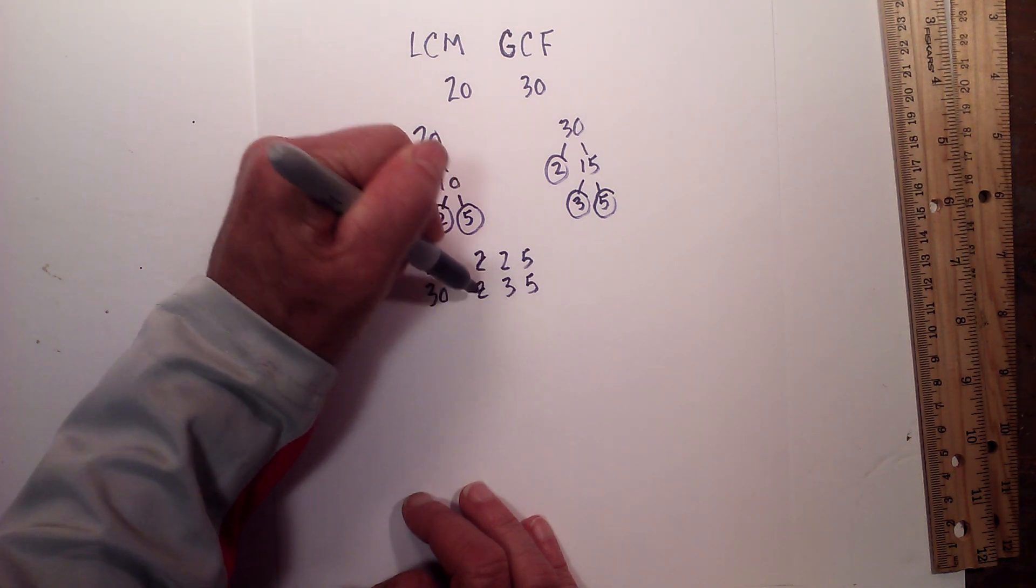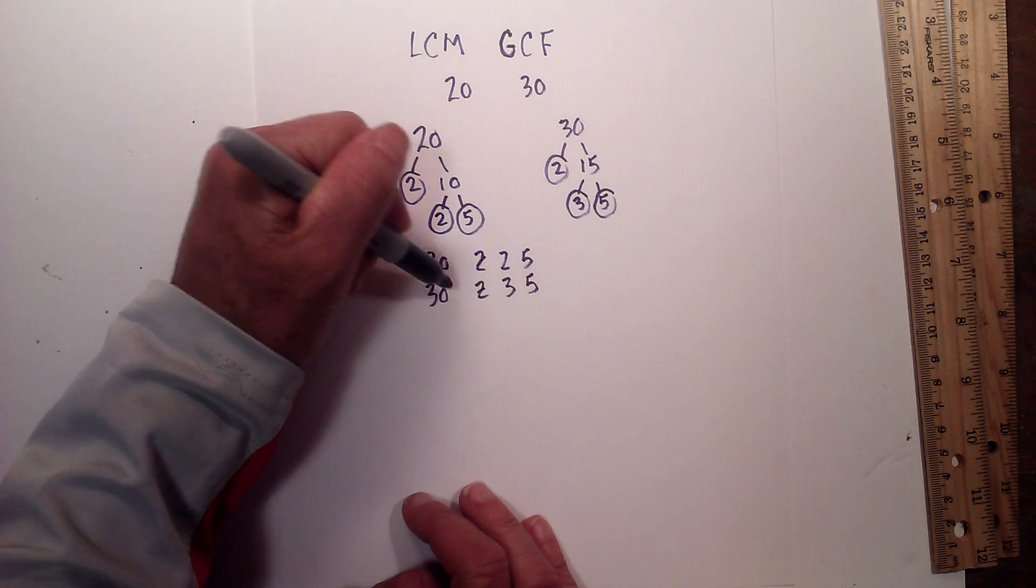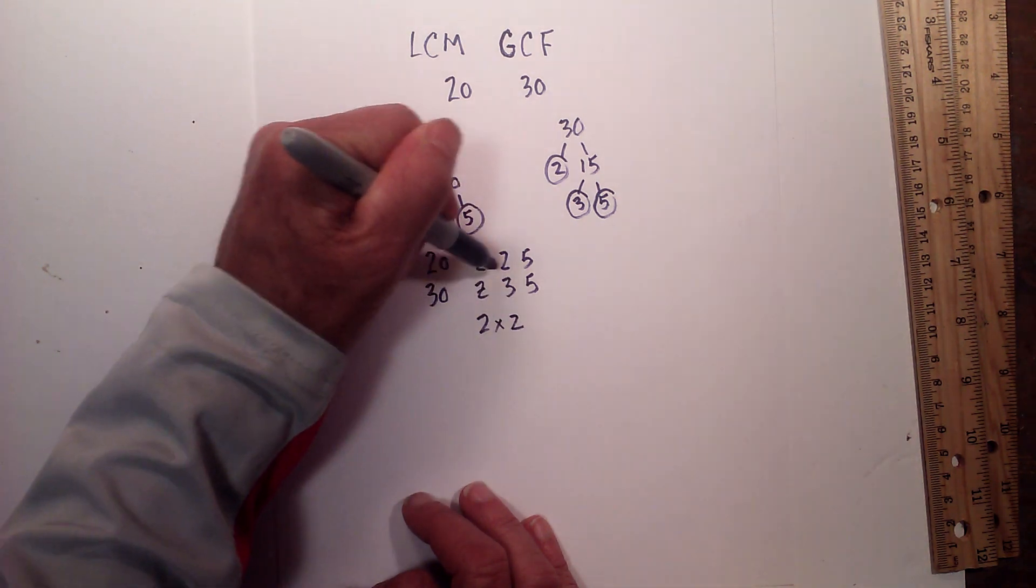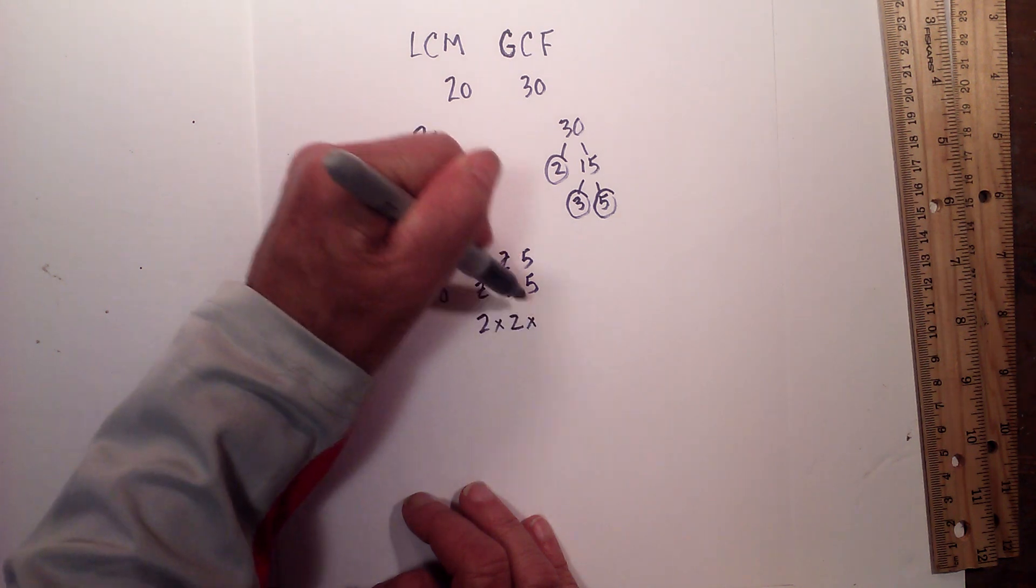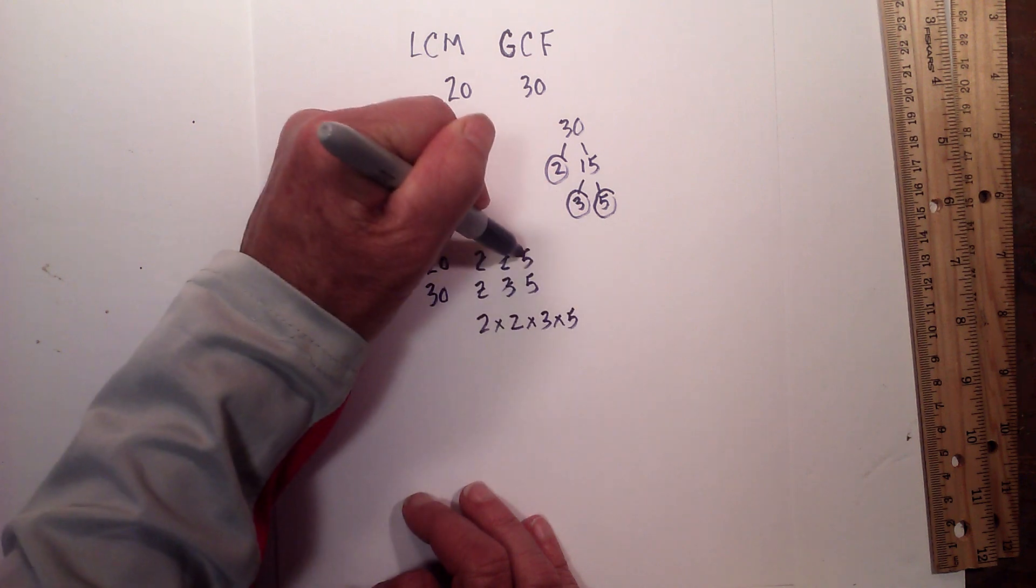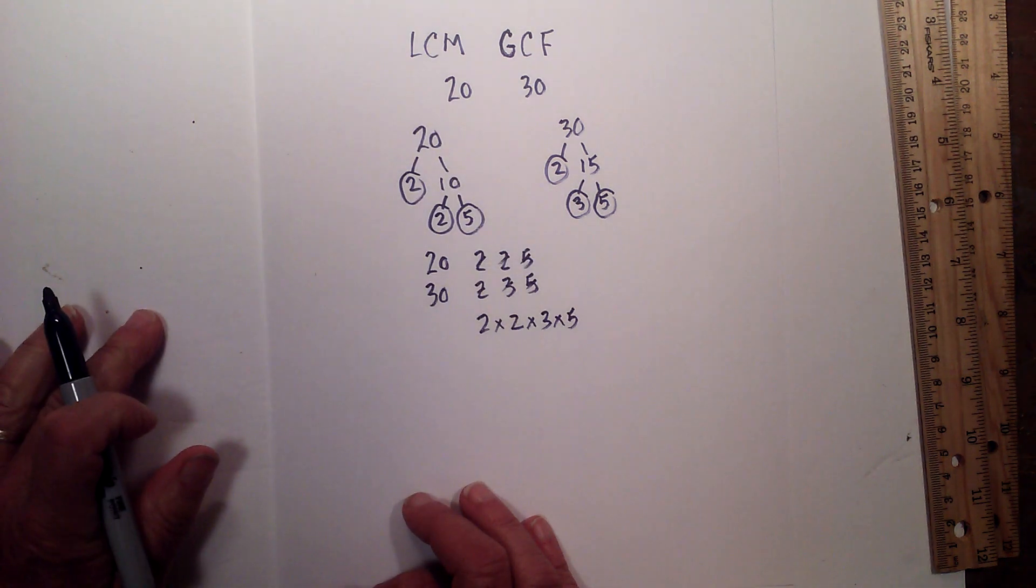So let's begin. We have 2 in both 20 and 30, so we multiply 2 times 2 times 3 times 5. Since it's a duplicate, we will only use it once.